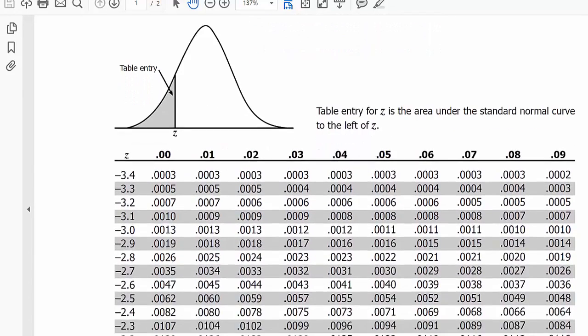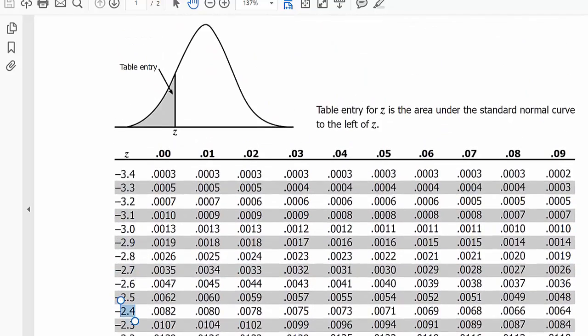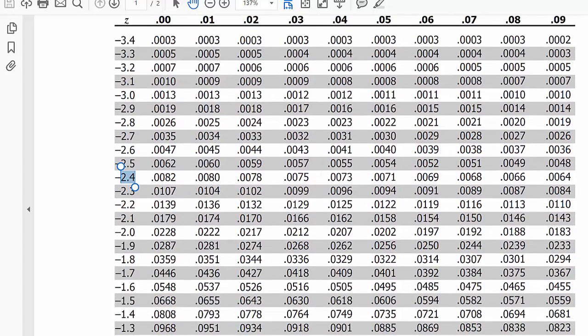When you look at the z-table, on the left column, they are all z-scores, but it shows 10-digit value, which means the first decimal digit, like negative 3.4, negative 3.3, or like 2.0, negative 1.6. Then how to read until 100-digit here?